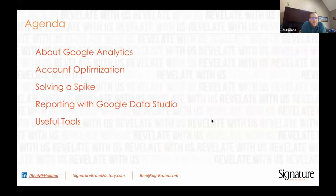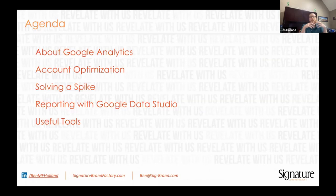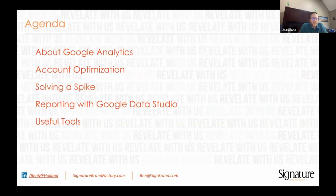Today with Google Analytics, first I'm going to talk a little bit about analytics itself. I'm going to show you how to optimize your account in the settings section. I'm going to show you a pretty common problem — a spike in traffic — and how to figure out where it came from. I'll briefly talk about using Google Data Studio to report, and then I'll go through a lightning round highlighting some useful tools I want everybody to be aware of.